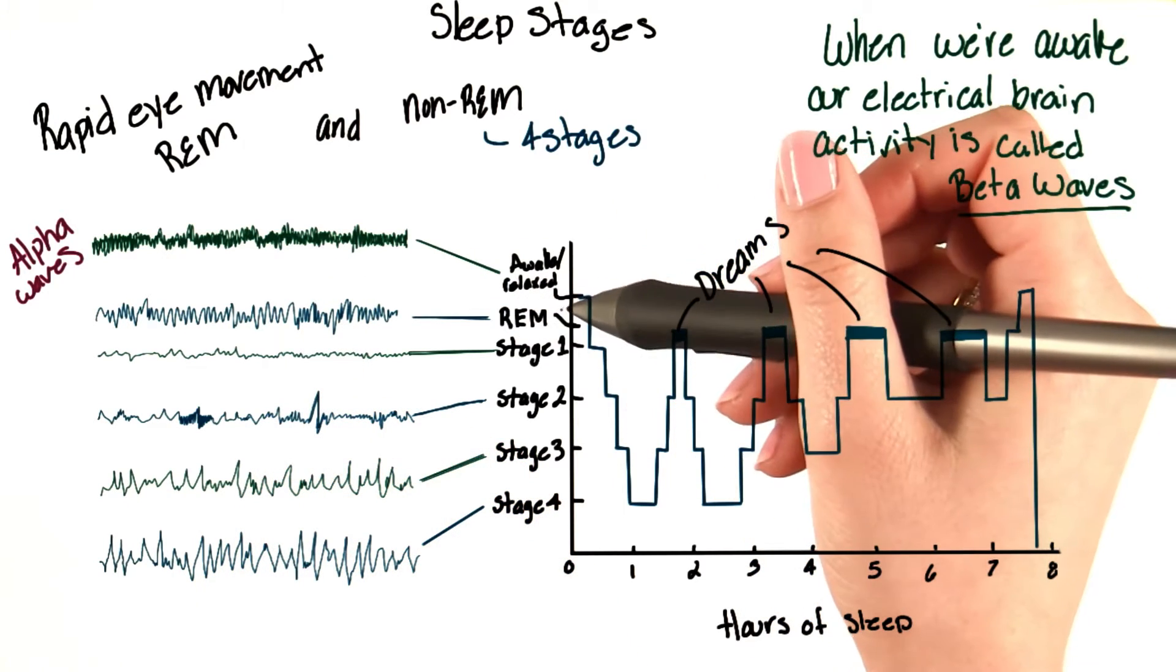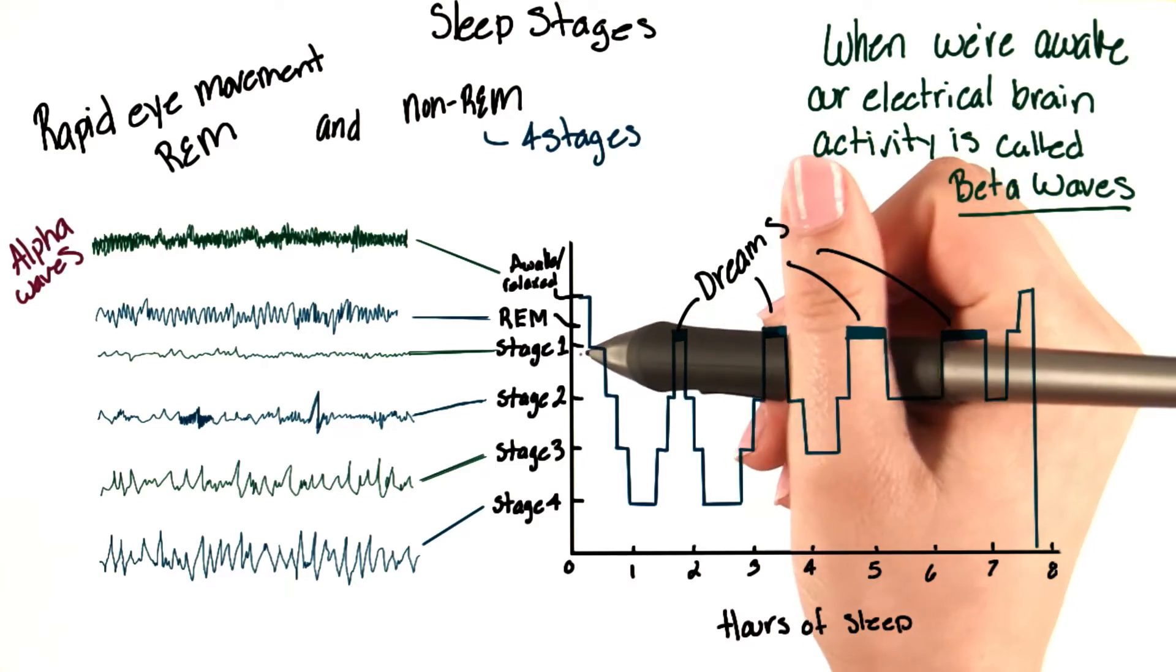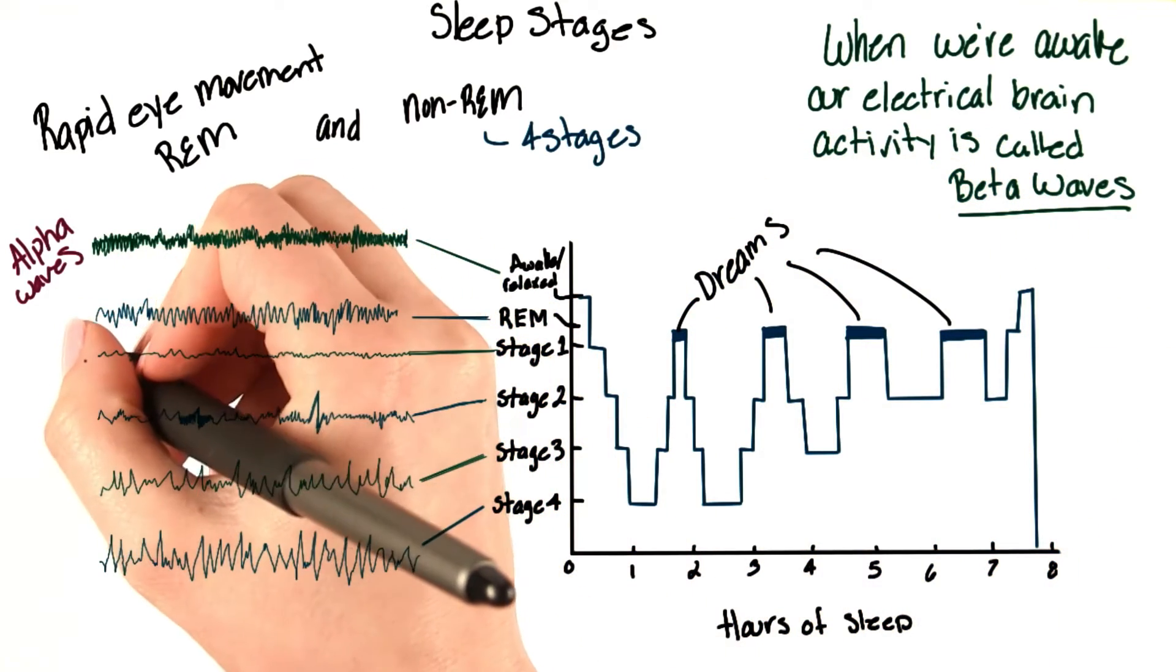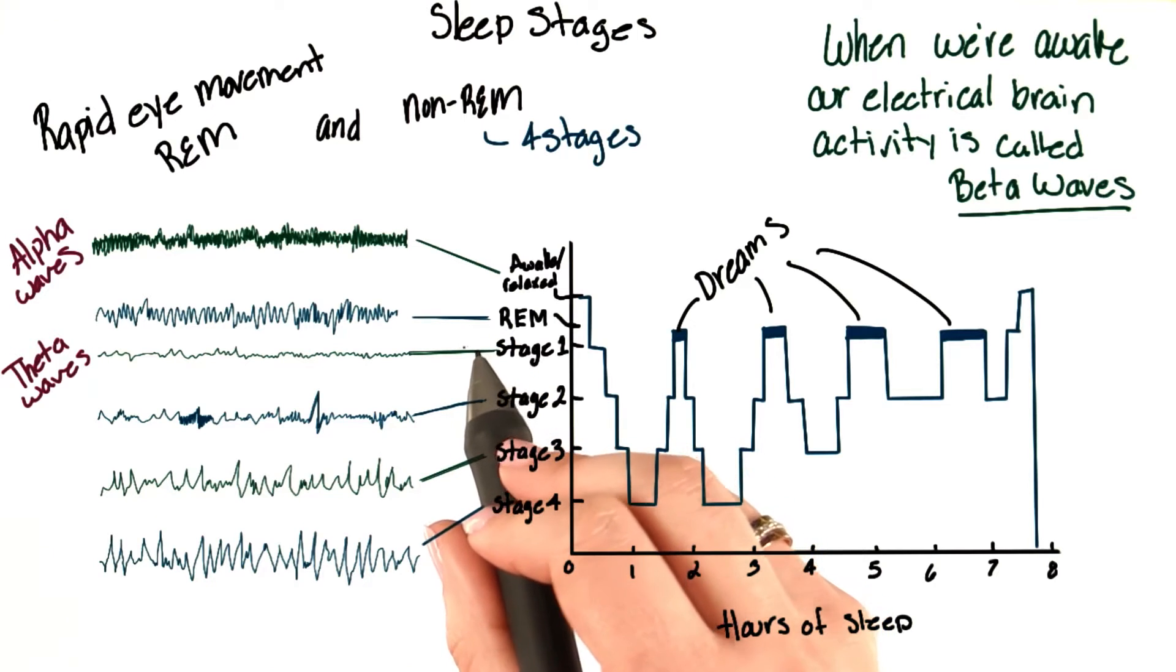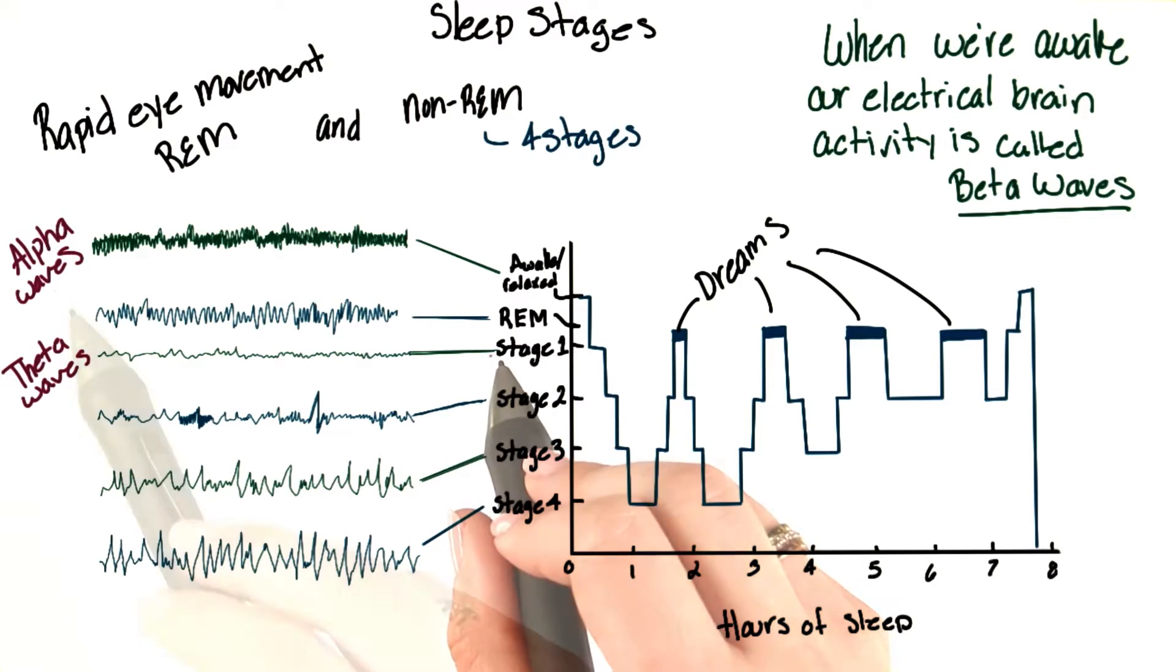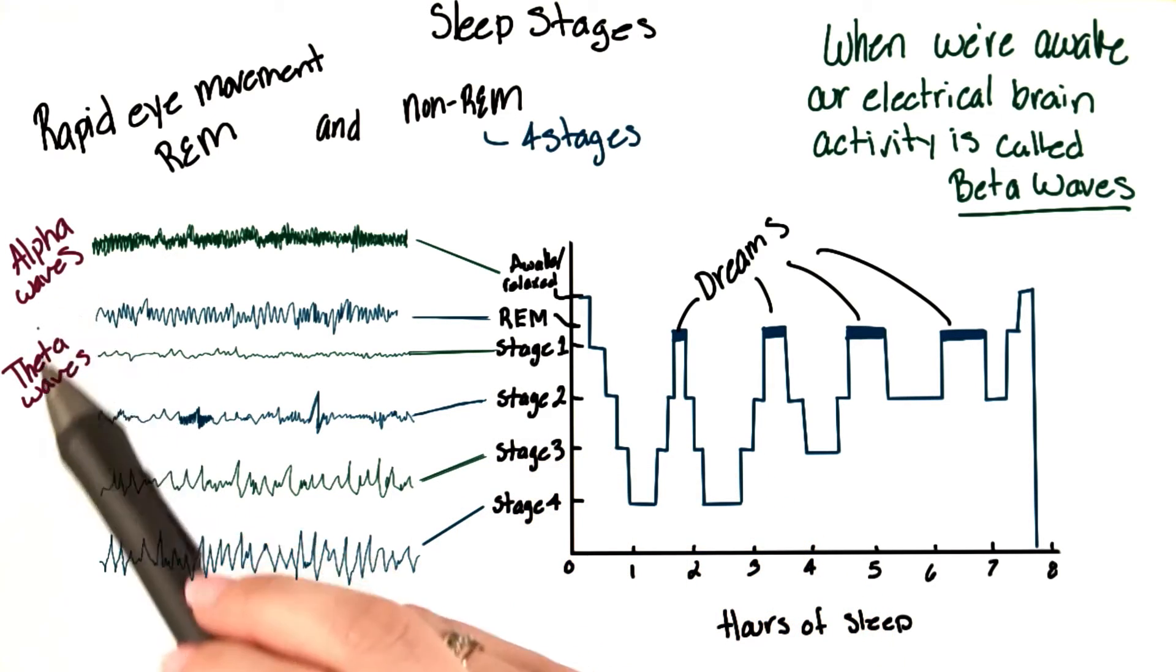And when we first fall asleep, we don't go into rapid eye movement sleep, but we go down to stage one. And during stage one, our brain waves are theta waves. So if you were looking at our brain wave activity, you would know that somebody fell asleep because they moved from alpha waves to theta waves.